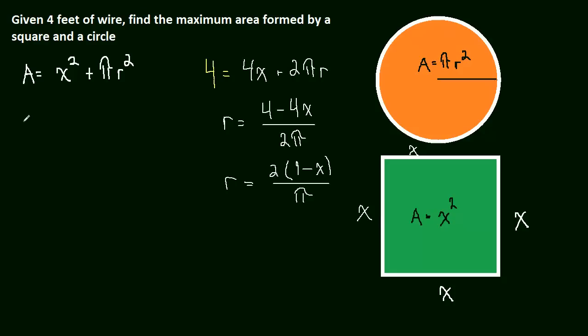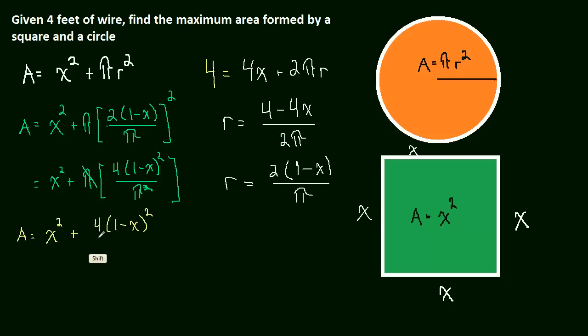So let's do that. So once we plug this in, this will be area equals x squared plus pi times 2 over 1 minus x over pi all squared. And this will simplify to x squared plus pi times 4 times 1 minus x all squared over pi squared. And then we'll just do one more simplifying step, which is to cancel one of these pi's out. This is pi times, and then it's being divided by pi squared, so one of those pi's will cancel. So area finally is equal to x squared plus 4 times 1 minus x all squared over pi.